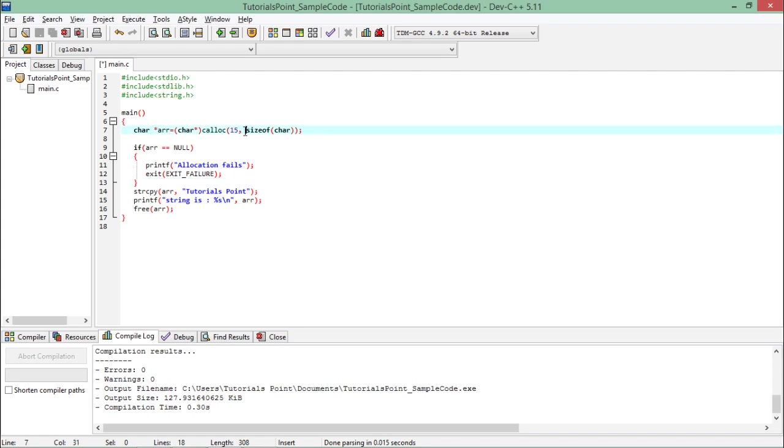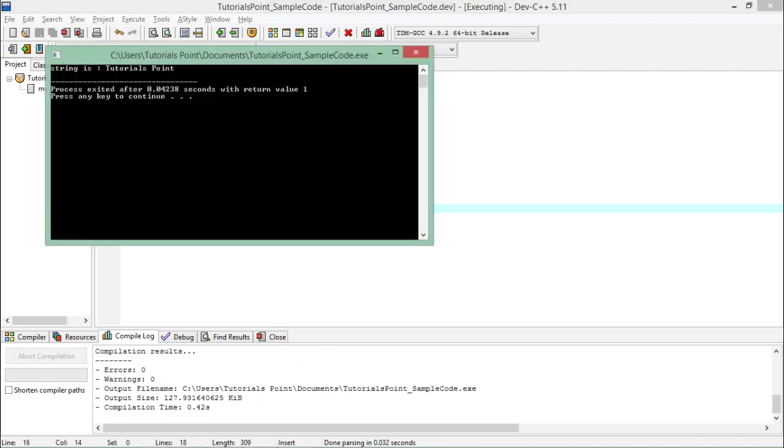The difference with calloc is the number of parameters. I pass two parameters: 15 for the number of blocks and sizeof(char) for the size of each block. So there are 15 blocks, each one byte. Everything else remains the same—I check if it's not null, proceed with execution, copy the value, and release the memory. The output remains the same.